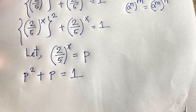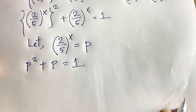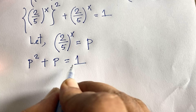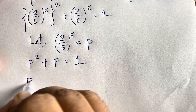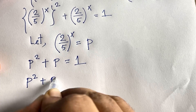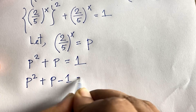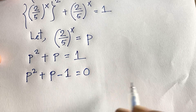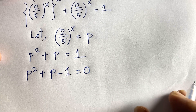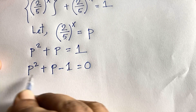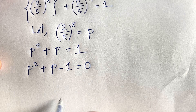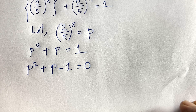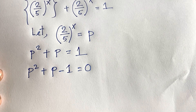This gives us a quadratic equation. Rearranging, p² + p - 1 = 0. Moving the 1 to the other side makes it negative. Here a = 1, b = 1, c = -1 when we compare with the standard form ap² + bp + c = 0.